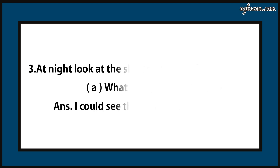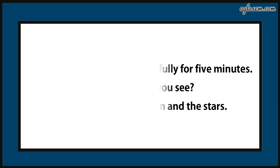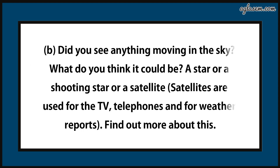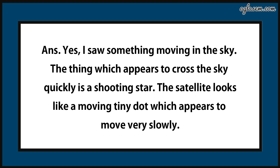Third question: At night, look at the sky carefully for 5 minutes. What could you see? I could see the moon and the stars. Did you see anything moving in the sky — a star, a shooting star, or a satellite? Find out more about this. Yes, I saw something moving in the sky. The thing which appears to cross the sky quickly is a shooting star. The satellite looks like a moving tiny dot which appears to move very slowly.